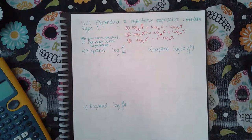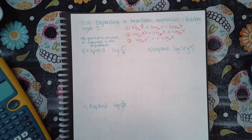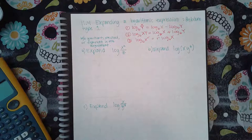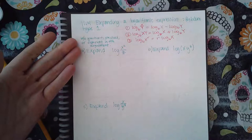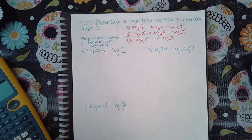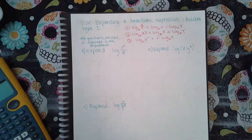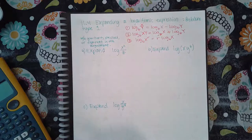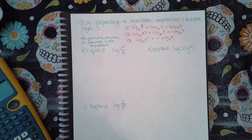For this particular topic, they're asking us to expand it. And what that means is you've got to write it so that the argument doesn't have a quotient, doesn't have a product, or an exponent. Right now, if you look at a, it has a quotient, a division, and it has an exponent, and so they want you to get rid of that.